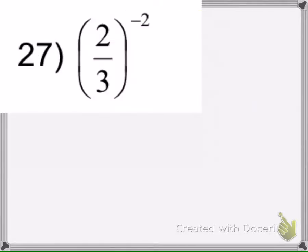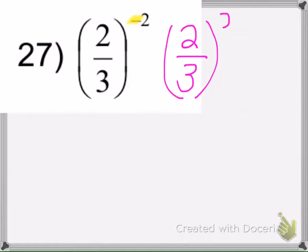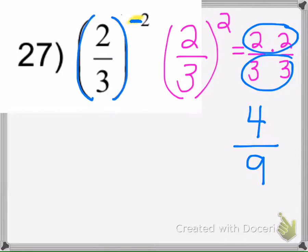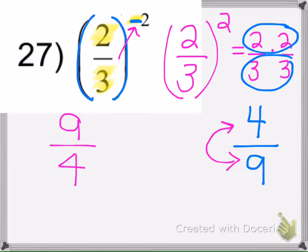Here we have a fraction raised to a negative exponent. I'm going to ignore the negative and figure out what it equals without it. So that's 2 thirds times 2 thirds: 2 times 2 is 4, and 3 times 3 is 9. Now, because it has a negative exponent, it's going to change the location of the numbers. Since it's in parentheses, the whole thing — numerator and denominator — has that negative exponent, so it's going to flip. We're going to have 9 fourths as our final answer.